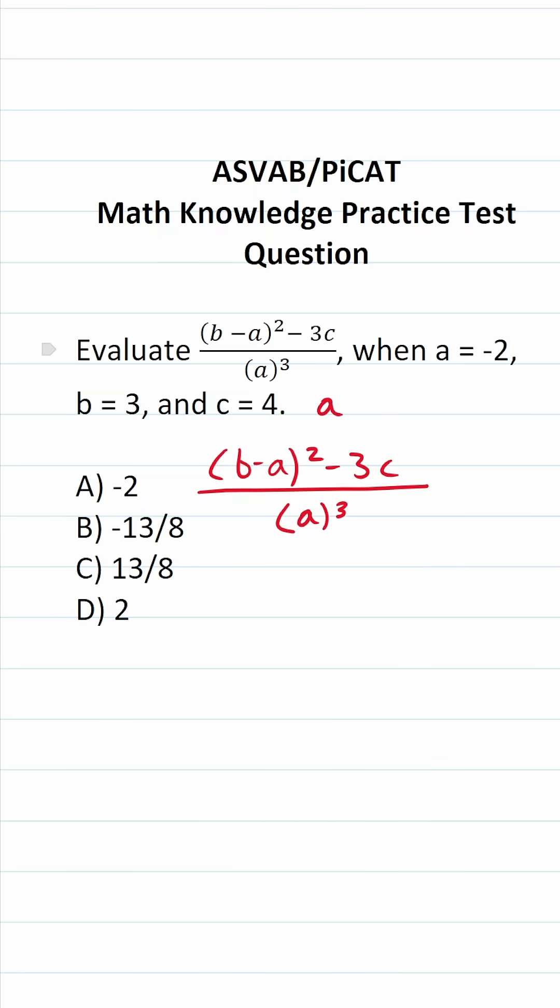We're going to be evaluating this expression when a = -2, b = 3, and c = 4. We'll plug those in respectively and then evaluate according to the order of operations. This becomes (3 - (-2))² - 3 × 4 all over (-2)³.